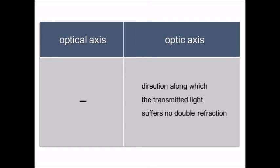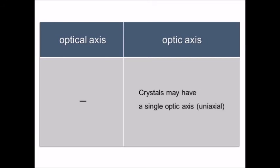Thus, light traveling parallel to the c-axis will behave as if it were traveling through an isotropic substance.